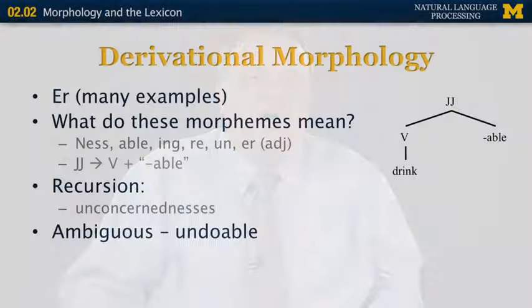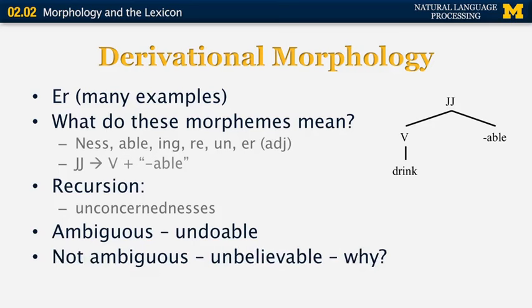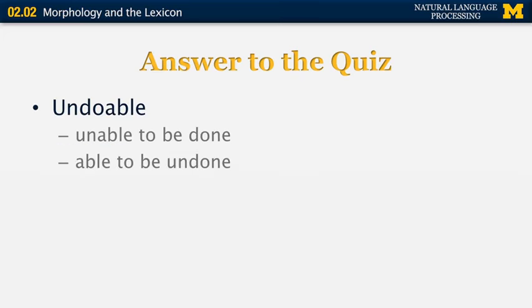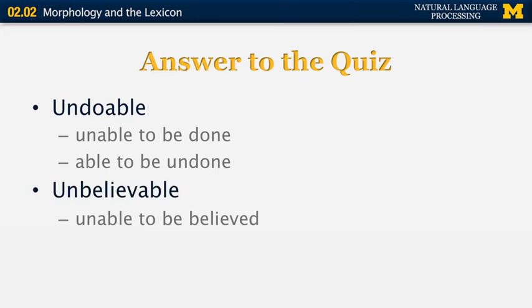In some cases it's easy to look at a complicated word and figure out how it was derived. But in other cases we may have ambiguities. For example, the word 'undoable' can have two different morphological interpretations, whereas a word like 'unbelievable' may only have one. 'Undoable' can mean 'unable to be done,' or it can mean 'able to be undone.' This doesn't apply to 'unbelievable' because 'able to be unbelieved' sounds very unnatural, so there is no ambiguity.